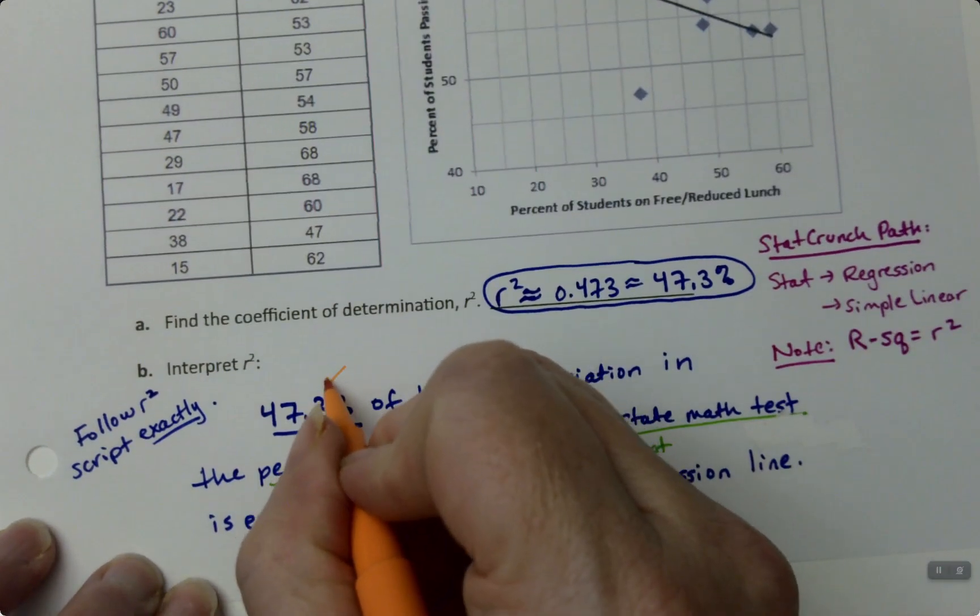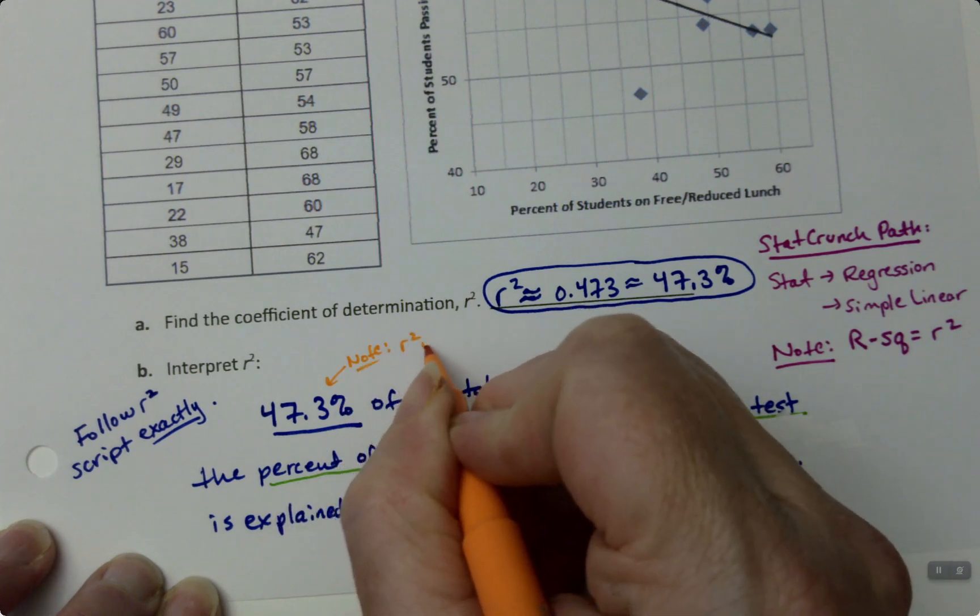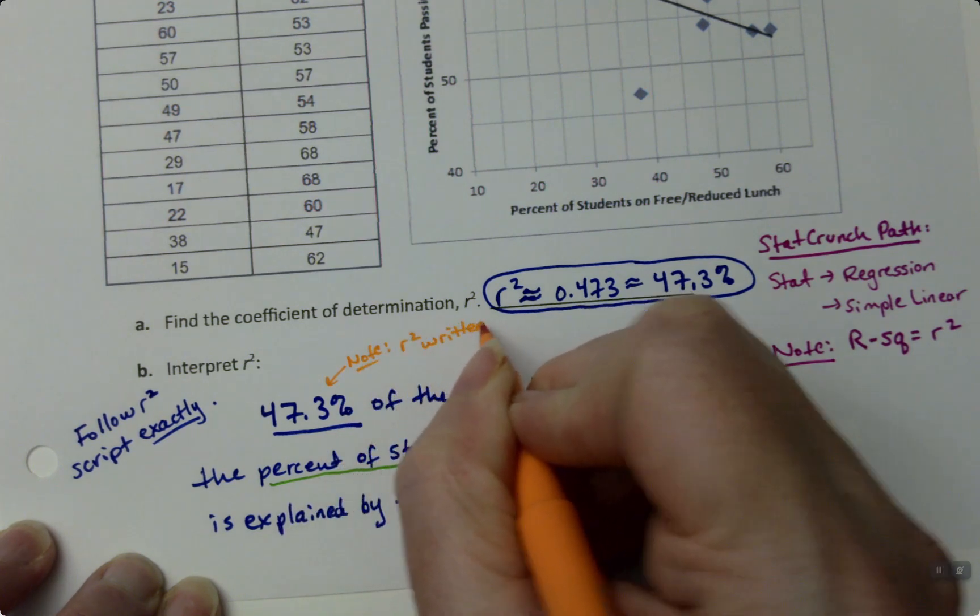Notice: R-squared is written as a percent. Do not write it as a decimal.